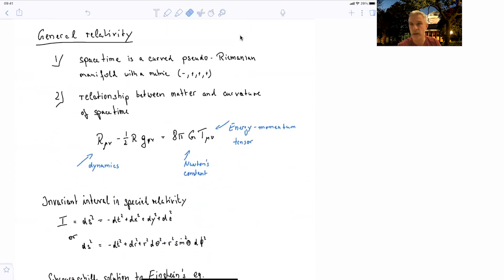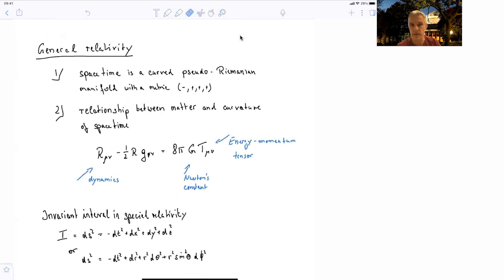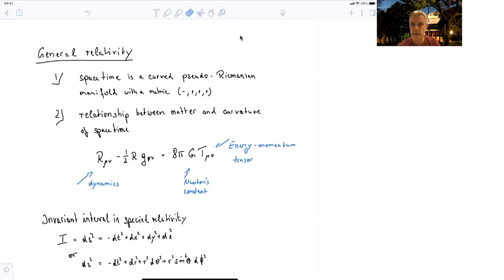Let's look at one example here. We discussed in special relativity invariant intervals. We had this delta S squared given by minus dt square plus dx square plus dy square plus dz square. We could have written this in polar coordinates as well, where you find a dr square, an r square d theta square, and an r square sine square theta d phi square. Same thing, just a different coordinate system.